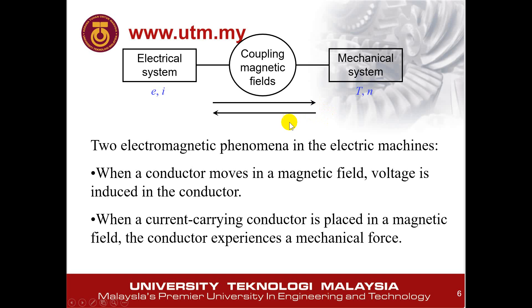There are 2 phenomena that make an electrical machine work. The first is when a conductor moves in a magnetic field, a voltage is induced in the conductor — this phenomenon is used to produce a generator, where movement is converted to a voltage or current. The second phenomenon is when a current-carrying conductor is placed in a magnetic field, the conductor experiences a magnetic force — this is used for a motor, where the current in the magnetic field produces a force.